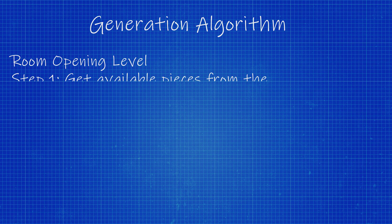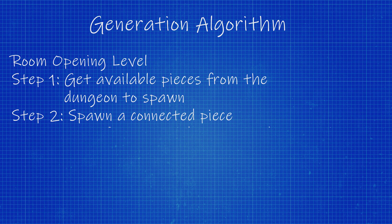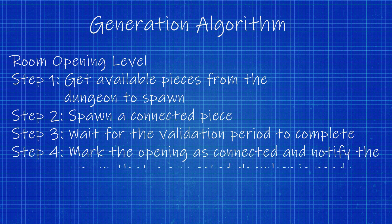What would this look like from the room opening? Step one, we get available pieces from the dungeon to spawn — I have a list of prefabs in the dungeon for all the different rooms and hallways that a given opening can spawn. Step two, we spawn a connected piece — a new chamber, hallway, or whatever. Step three, the opening waits for a validation period to complete, waiting until the room is confirmed in a valid state. Then lastly, it marks the opening as connected and notifies the room that an adjacent chamber is ready.